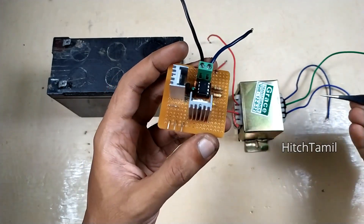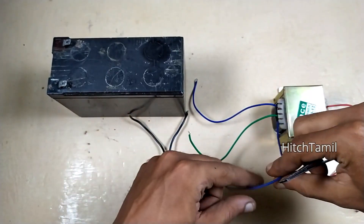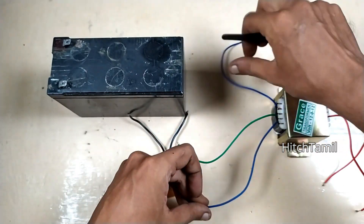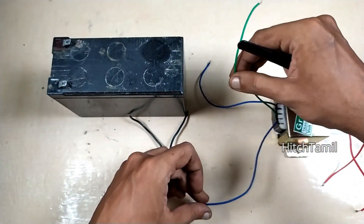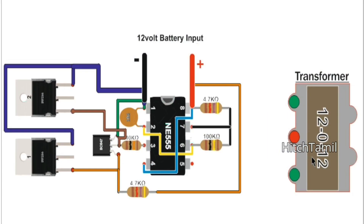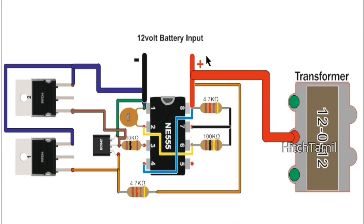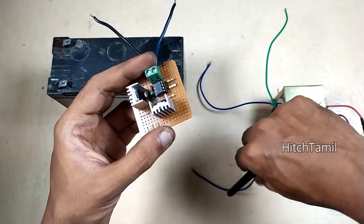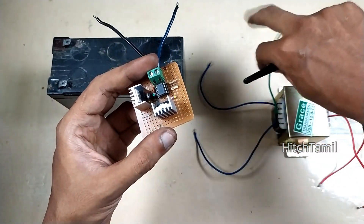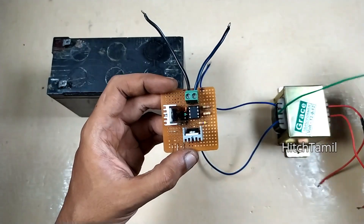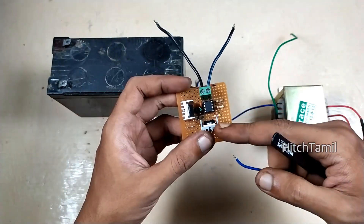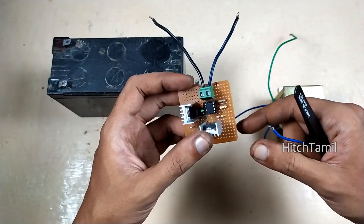Let's see here: 12, 0, 12 — this is the 0 line. The 555 IC connects to the plus line, and this is the transformer. For the MOSFET, you can use IRF Z44n on the plus line.